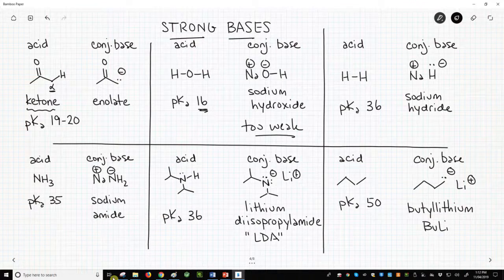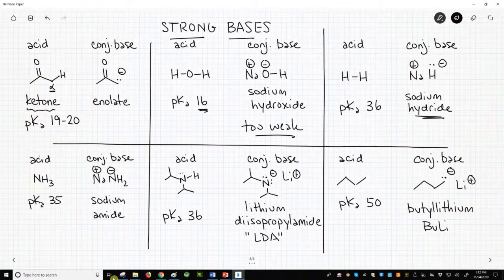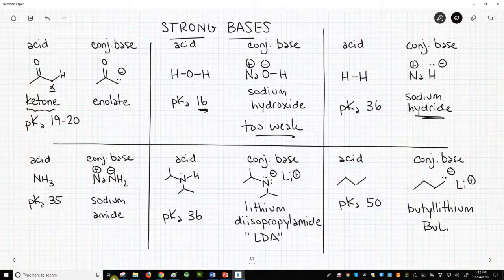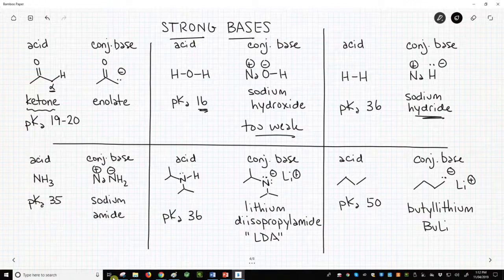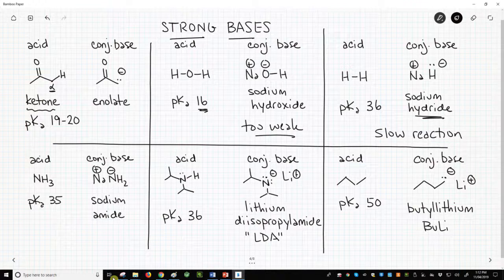The next pair in the top right corner is H2 slash NaH. We used sodium hydride to make alkoxides. Sodium hydride is protonated to form H2 gas with a pKa around 36. H2 has a nice high pKa greater than 20, but sodium hydride reacts very slowly with ketones. So slow reaction. People don't use it much.